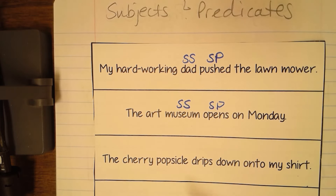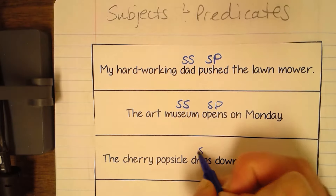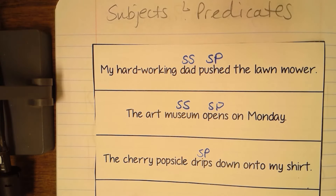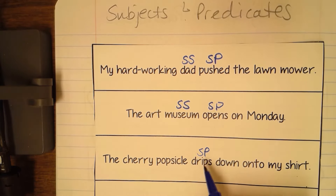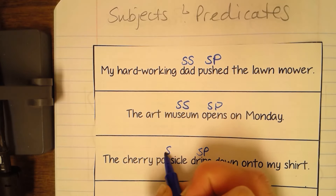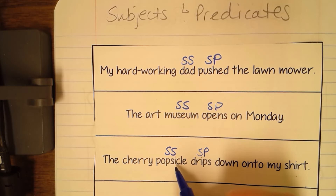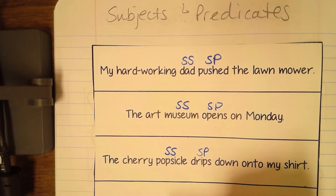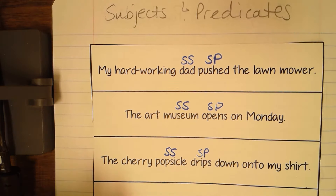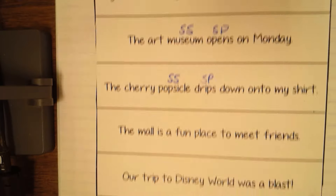The next sentence: the cherry popsicle drips down onto my shirt. It might help to find the predicate first. 'Drips' is the only verb, so that's our simple predicate. Now what is doing the dripping? Think about the main thing doing the action without any descriptive words. 'Popsicle' is our simple subject. 'Cherry' is just describing the type of popsicle — there are lots of different types and flavors — but the main subject of the sentence is talking about the popsicle.